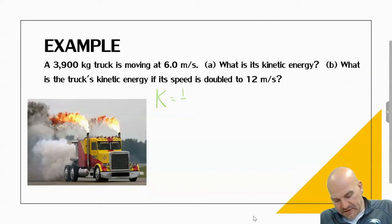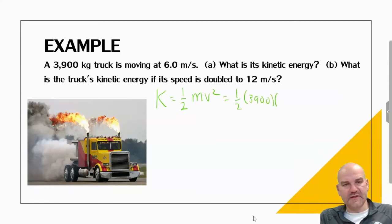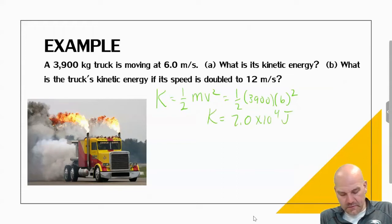For part A, let's calculate the kinetic energy of the truck. So all we do is one half mv squared. We do one half times mass, which is 3,900 kilograms, times 6, which is the speed squared. And so that's going to give me a kinetic energy of 7.0 × 10⁴ joules.